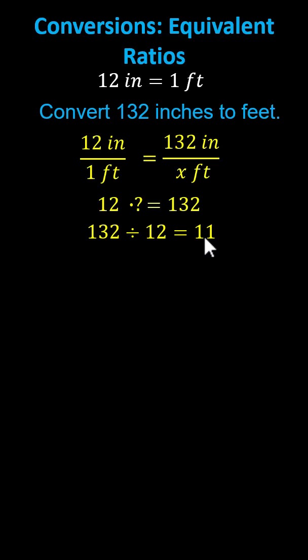Which means to find the equivalent ratio on the right, we multiply both 12 inches and one foot by 11. Notice this gives us, in the denominator, one foot times 11, or 11 feet, and therefore x equals 11. The ratio of 12 inches to one foot is equivalent to the ratio of 132 inches to 11 feet, which indicates 132 inches equals 11 feet.